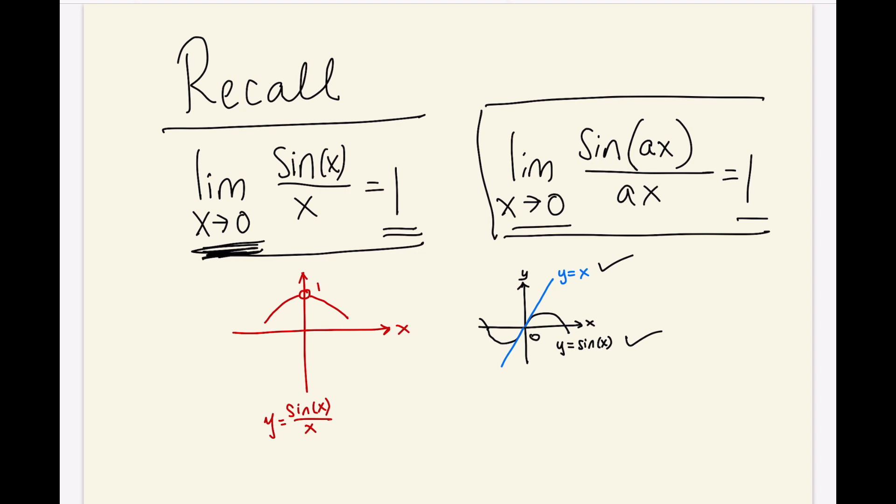The limit as x approaches 0 of sin(x) divided by x is equal to 1. In Chapter 2, we were given the graph of the function to give us an intuitive idea. In Section 3.3, we were given a geometric proof of this fact. You can also take a look at the graphs of the function y equals x in the denominator, which is this line, and y equals sin(x), which is in the numerator. And you can see that as we get close to 0, these functions look almost identical.